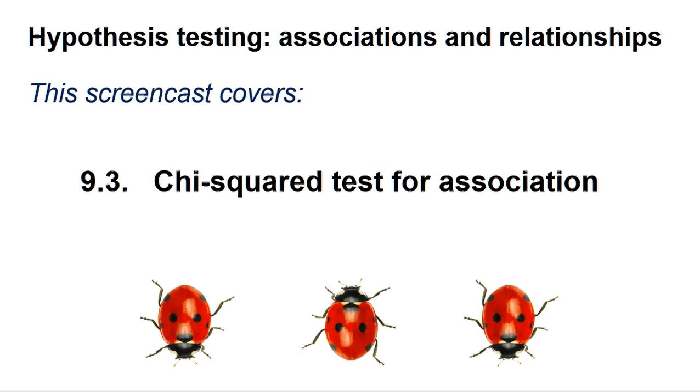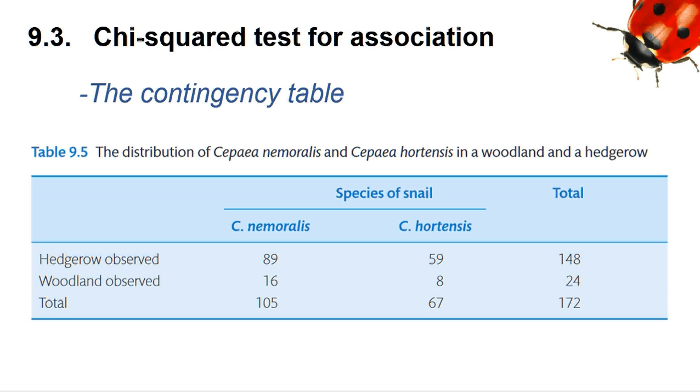A chi-squared test for association is performed when you are looking for an association between two factors that both have distinct categories. In our example, the factors are species and location, and each has two categories. For the former, the observed snail is either C. Nemeralis or C. Hortensis. For the latter factor, each observed snail was either found in the hedgerow or the woodland. Thus, each observation can be exclusively assigned to two categories, with each category being part of a different factor.